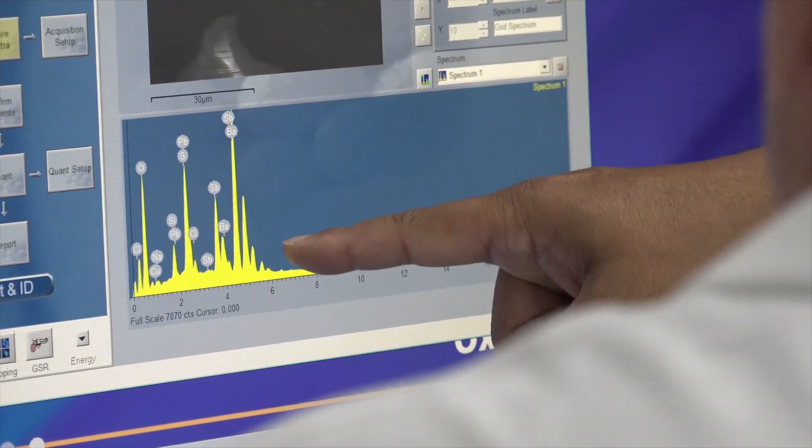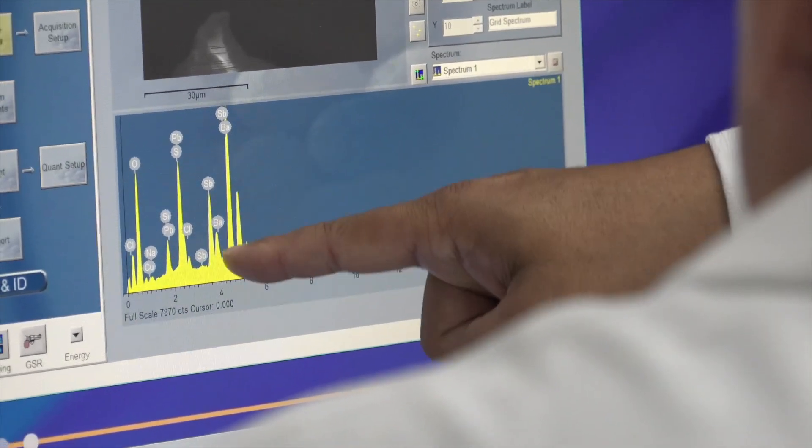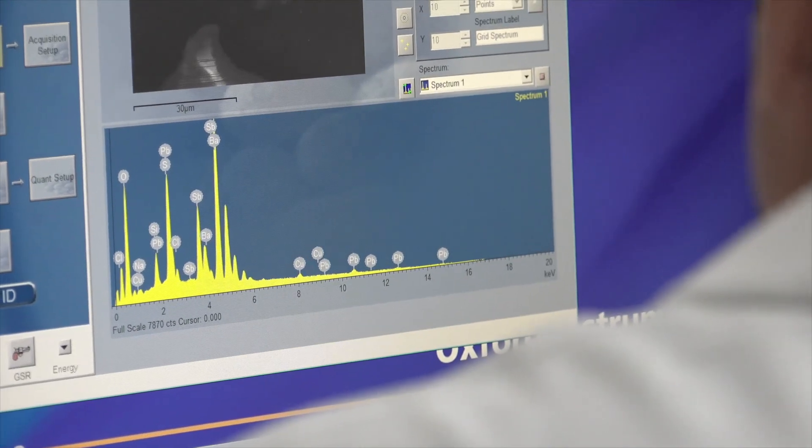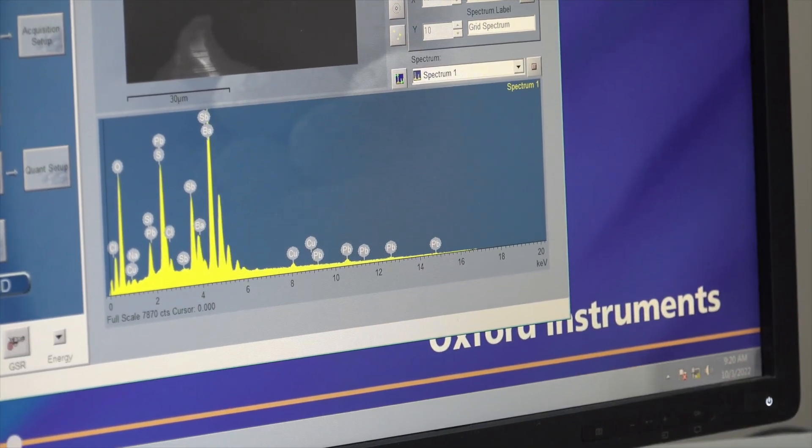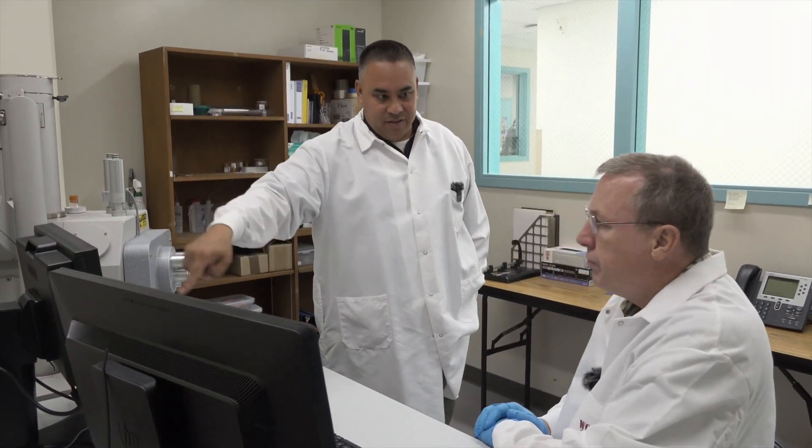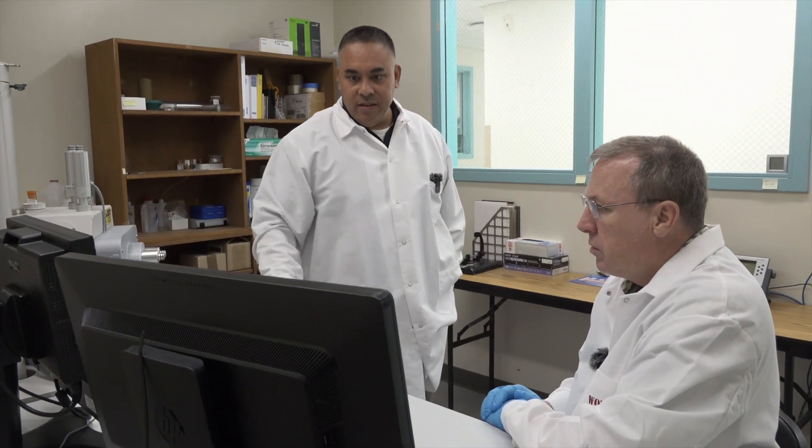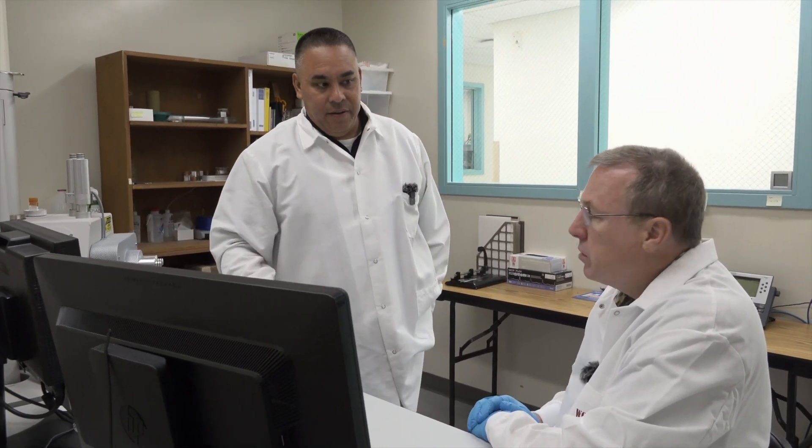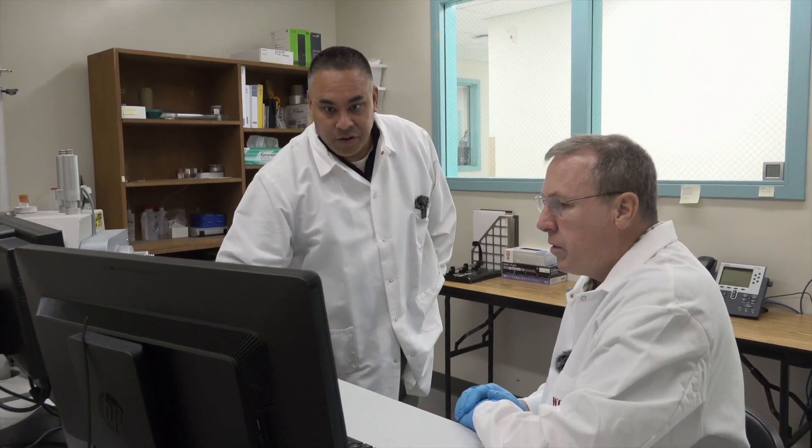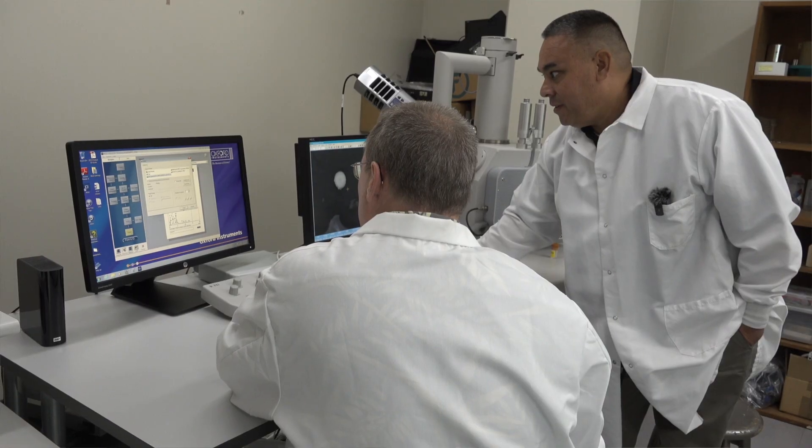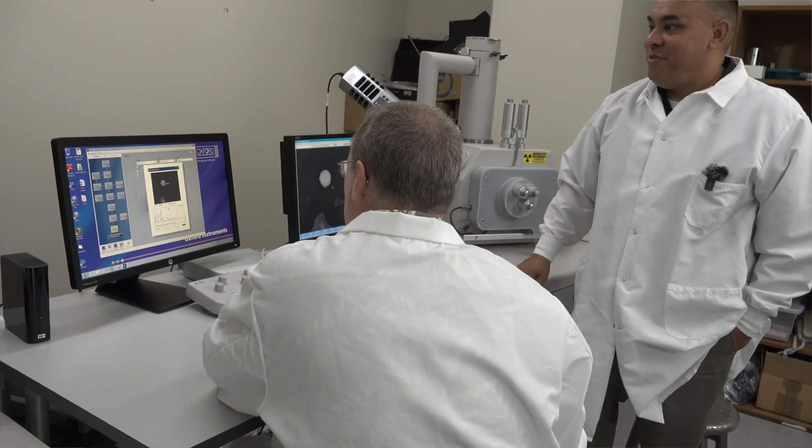Barium here and antimony there. So what we're looking at here fits our criteria for a gunshot residue particle. It's got that spherical shape. It's got the elements lead, barium, and antimony. Okay. And then we'll just put this in our report. And that's how we find our gunshot residue particles.